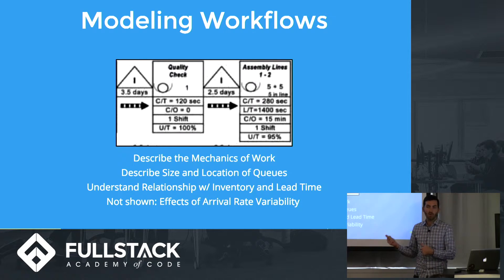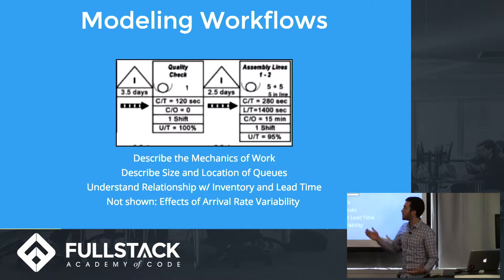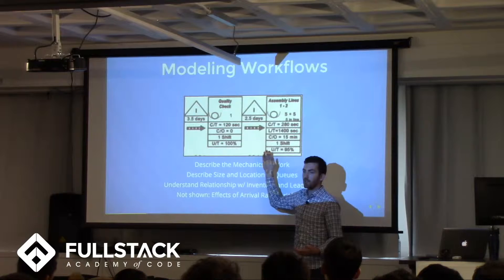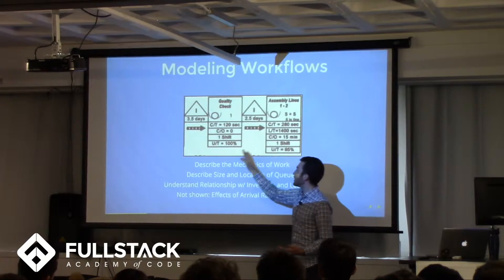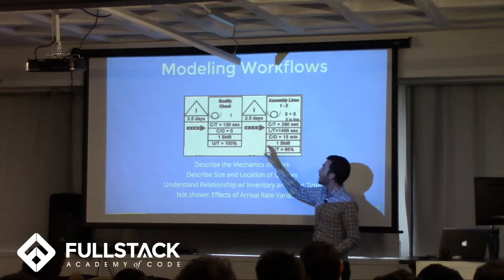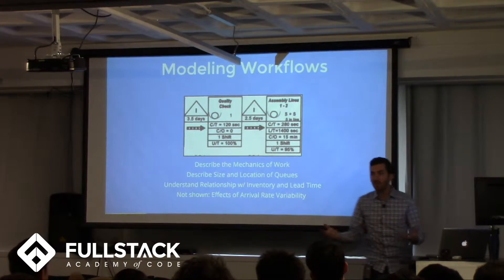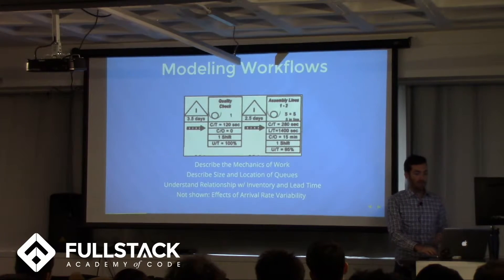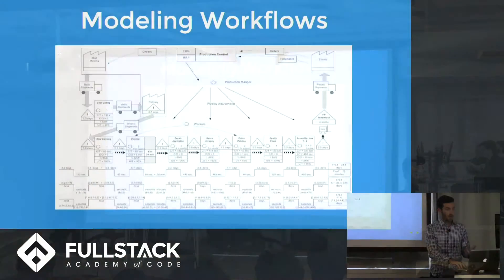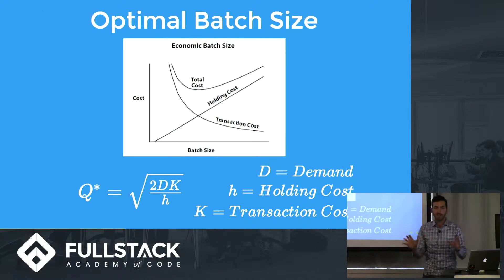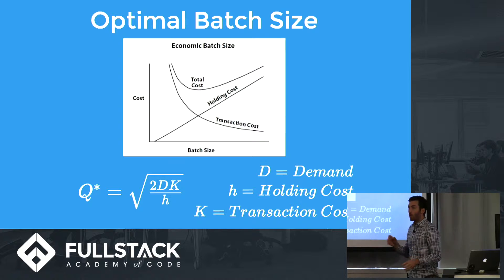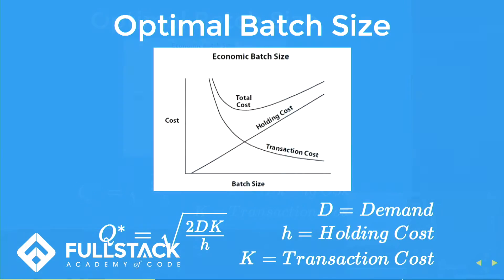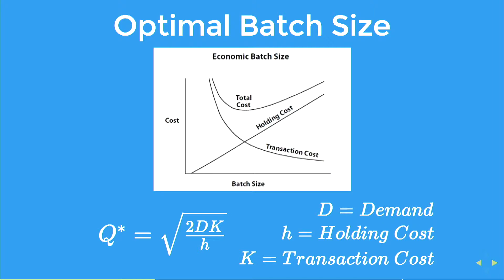Not shown here, but worth discussing, are the effects of arrival rate variability. If this person is feeding that person, it's not always going to happen at the same rate, so to make sure there's always something for the second person to do, we have two and a half days of inventory. This isn't intentional, but it's the effect — we always want our servers to have work to do. These models can get complicated quickly, but we just need to understand the basics. Now that we have a basic model, we want to say: how can we control this workflow? We want a prescriptive model — one we can control and optimize — and one of the things we're going to optimize is batch size.